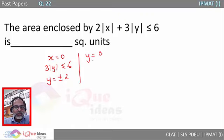Similarly if I assume that y is equal to 0, I get 2|x| is less than or equal to 6, where potentially the values of x could be in the range of plus or minus 3.